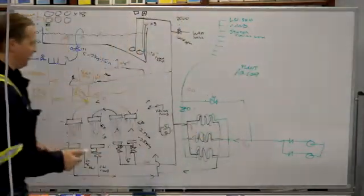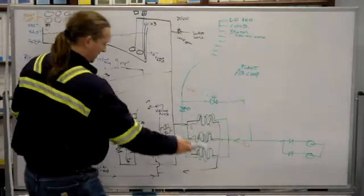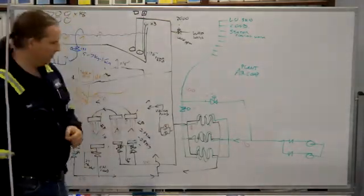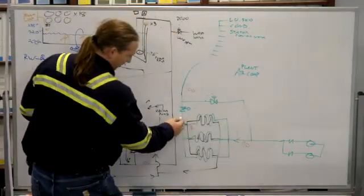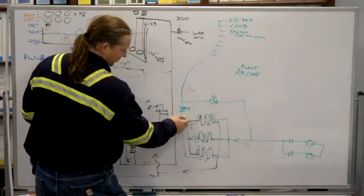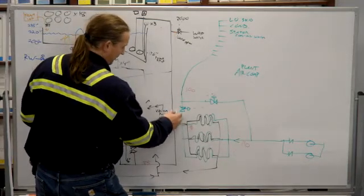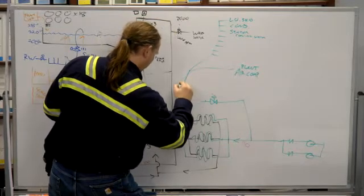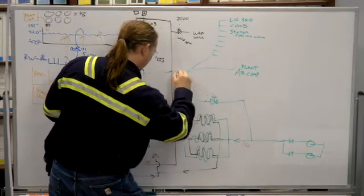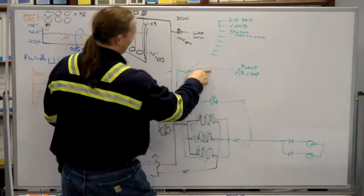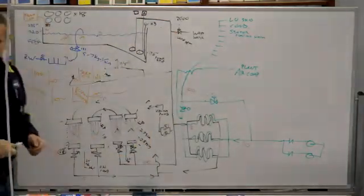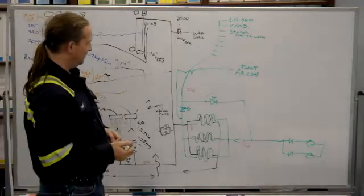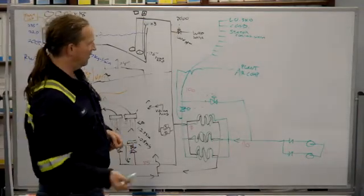Plant air compressor, similar to the vacuum pumps, needs colder water than most of the stuff around here. So it gets its tap off here at that 96 degrees before we get to that mixing valve. Returns to the head tank.